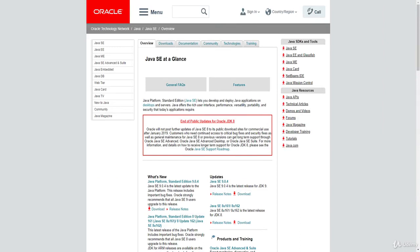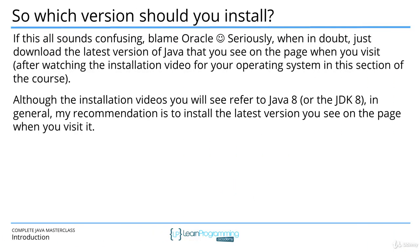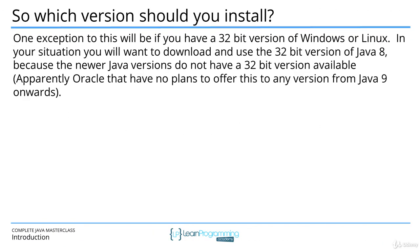I suggest you watch the installation videos for your operating system in this section of the course. You'll actually see Java 8 referred to in those videos, but in general my recommendation is still to install the very latest version of Java you see on the page when you go and visit. There is one exception: if you've got a 32-bit version of Windows or Linux, you'll have to download and use the 32-bit version of Java 8.